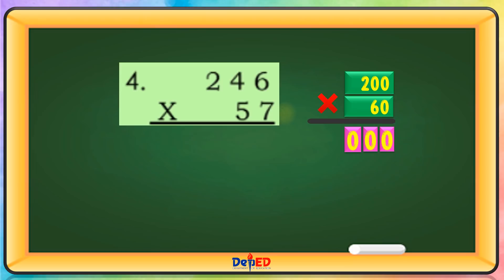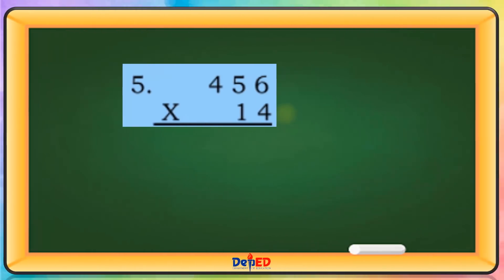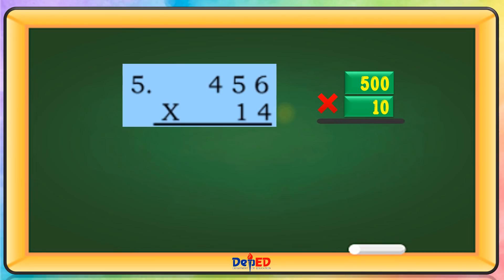456 will be rounded off to 500 and 14 will be rounded to 10. 500 times 10 equals — let's copy the three zeros. And then multiply 1 times 5 equals 5. The estimated product is 5,000.